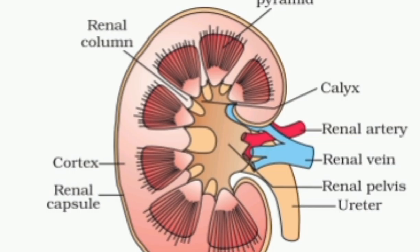Each kidney is convex on the outer side and concave on the inner side. The inner side of the kidney has a fissure for the entry of the renal artery, which carries blood into the kidneys for filtration, and the exit of the renal vein, which takes away blood from the kidneys after filtration, and the ureter. The ureter passes urine formed in the kidneys to the urinary bladder.